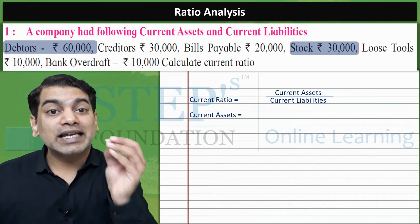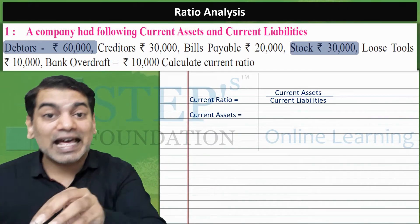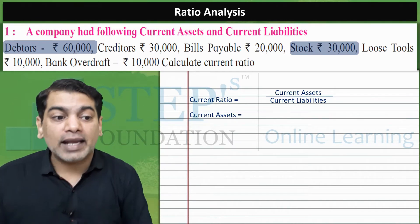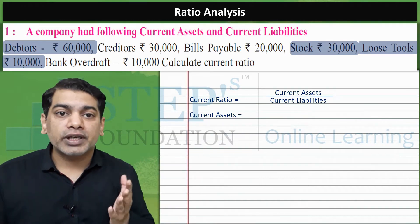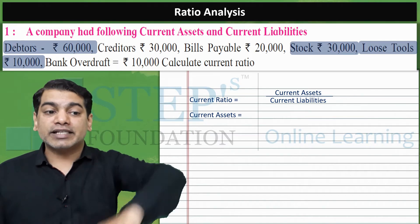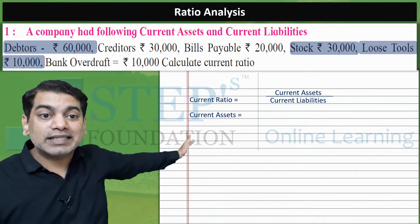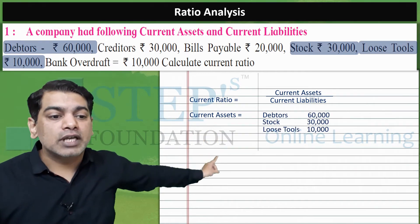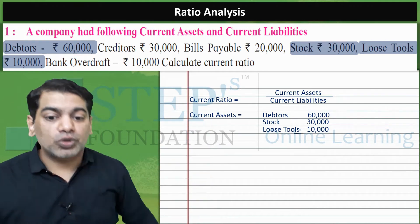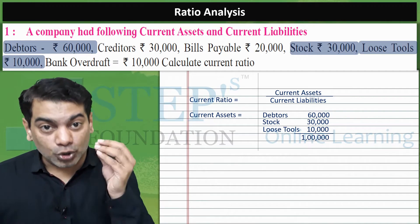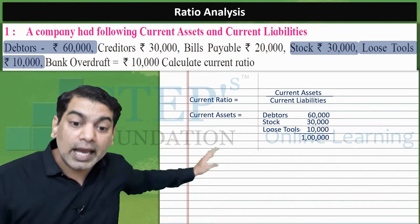Loose tools are current assets, so I highlight them. The last item is bank overdraft — is overdraft our asset? No, so ignore it. So my three current assets are: debtors 60,000, stock 30,000, and loose tools 10,000. Adding these three, my total current assets are 1 lakh. For current ratio I need both current assets and current liabilities, so I have current assets calculated as 1 lakh. Now I need current liabilities.